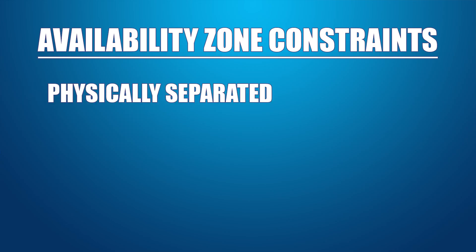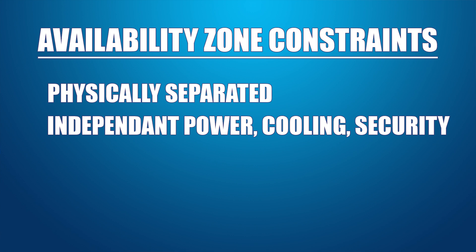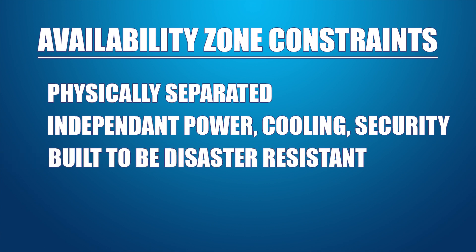This is an important concept, and we're going to come back to it later in this video. An availability zone has to meet certain constraints. It must be physically separated from the other availability zones in that region by a meaningful distance, like a couple miles, but not more than 60 miles. It has to have independent power, cooling, and physical security, and each one is built with a goal of ensuring that local disasters such as earthquakes, fires, tornadoes, or power outages won't affect multiple availability zones.